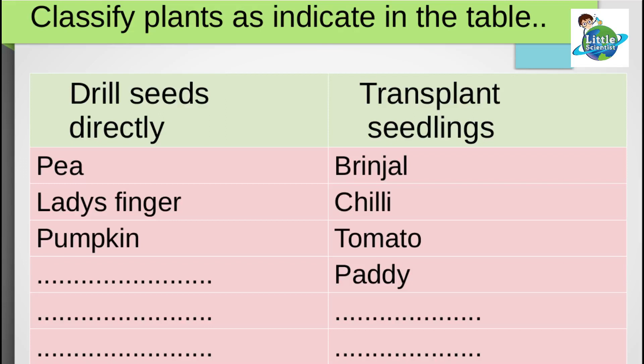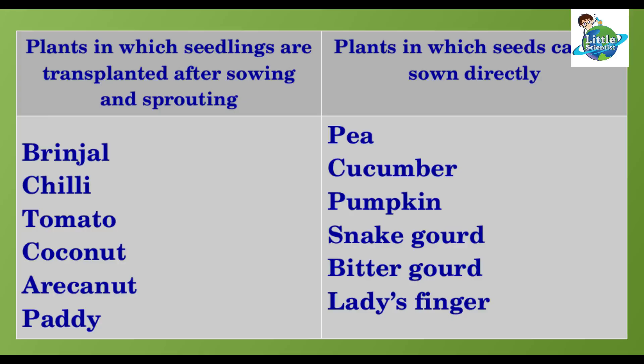We know in the case of pea, ladyfinger and pumpkin, we are drilling seeds directly to the soil. And in the case of brinjal, chili, tomato, paddy, etc., we transplant the seedlings. Now, fill the column with more examples from your vegetable garden.